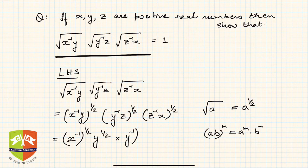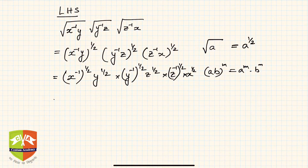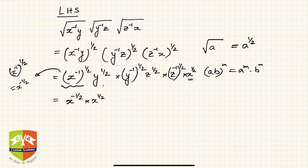So we get x to the power minus 1 whole to the power half, then y to the power half, then y to the power minus 1 whole to the power half, then z to the power half, then z to the power minus 1 whole to the power half, and x to the power half. Now let's club all the powers of x, y, and z. x to the power minus 1 to the power half is x to the power minus 1/2, and then we also have x to the power half. Similarly for y and z.